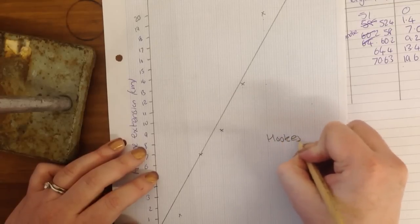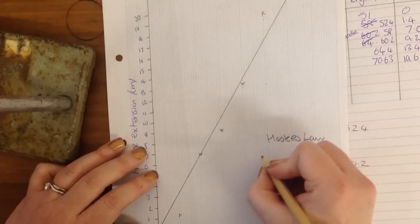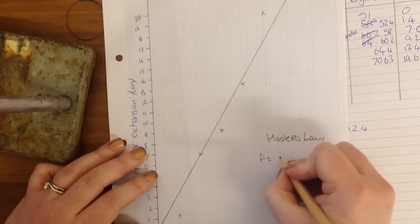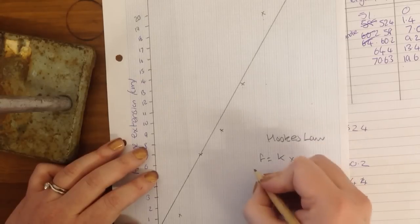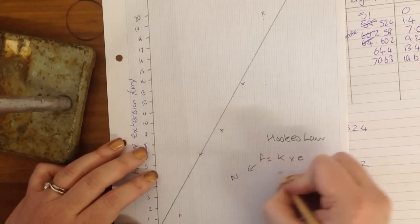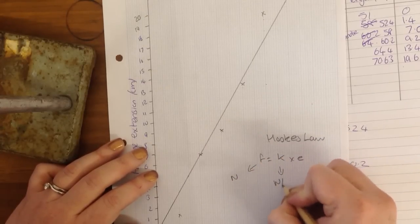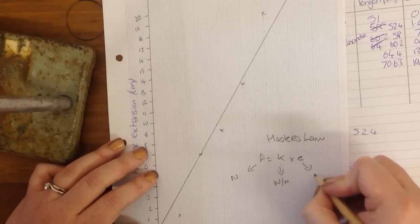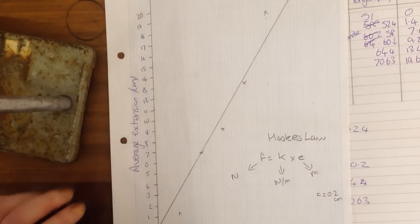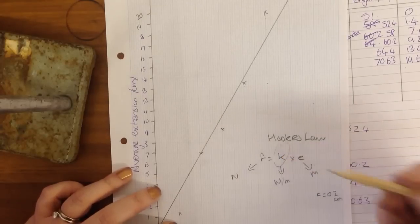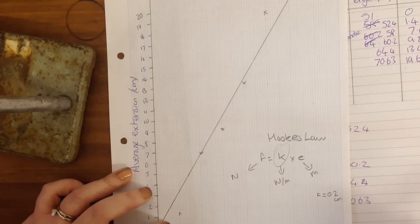Now, Hooke's law states that the force is equal to the spring constant times the extension. The force is in newtons, the spring constant is in newtons per meter, and the extension is in meters. So what we need to do now is a little bit of maths to find out the spring constant of this particular spring.